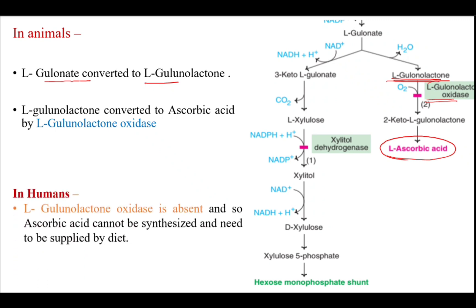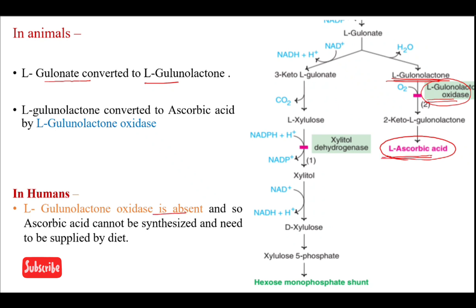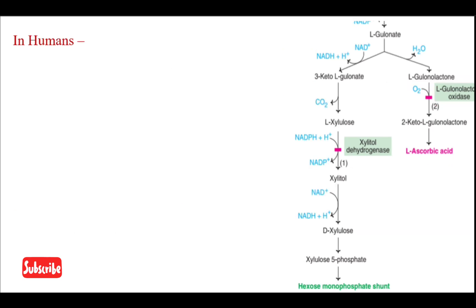In humans, the enzyme L-gulonolactone oxidase is absent, so ascorbic acid cannot be synthesized and has to be supplied by diet.